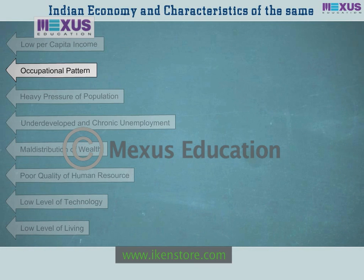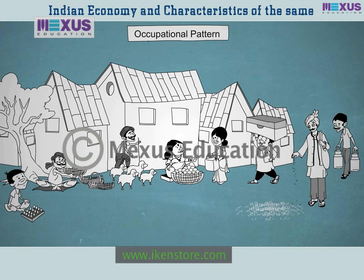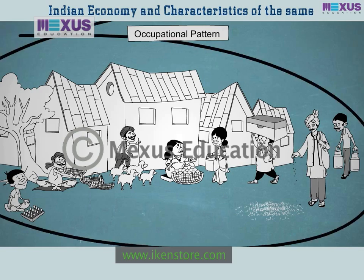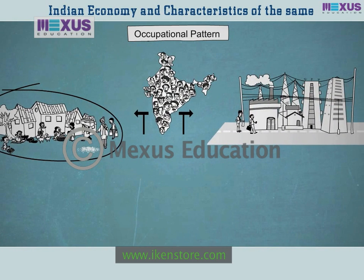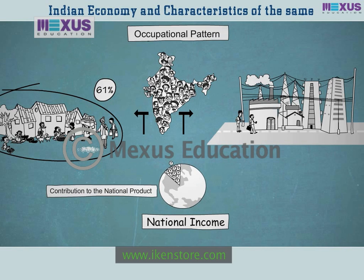Occupational pattern. One of the basic characteristics of an underdeveloped economy is that it is a primary producing economy. A very high portion of the working population is engaged in agriculture and allied primary activities, which contribute a relatively small share to the national income. As per 1999 data, 61% of the working population was engaged in agriculture, but its contribution to the national product was merely 28%.